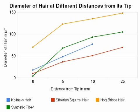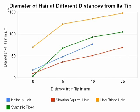To better visualize the data it is convenient to put it in a graph called 'diameter of hair at different distances from its tip.' The x-axis is the distance from the tip in millimeters — 0 corresponds to the tip, then 5 mm, 10 mm, and 25 mm from the tip. The y-axis shows the diameter in micrometers: 50 µm, 100 µm, and 150 µm. The plots are color coded: blue for Kolinsky hair, red for Siberian squirrel hair, orange for Hogg Bristol hair, and green for synthetic fiber.